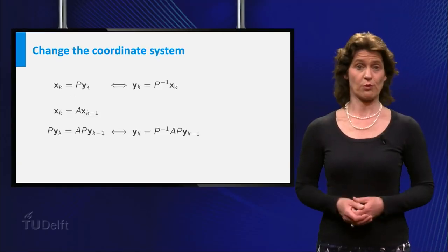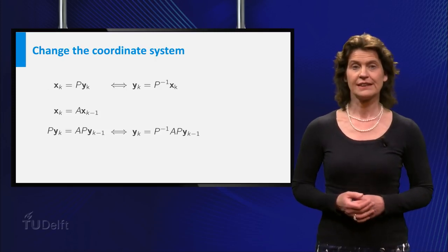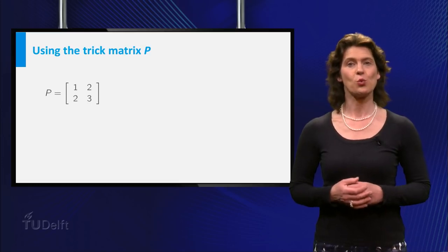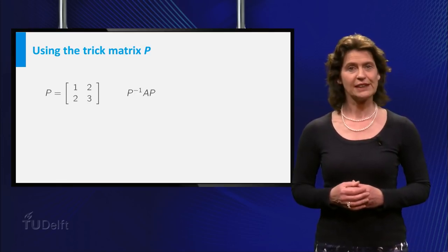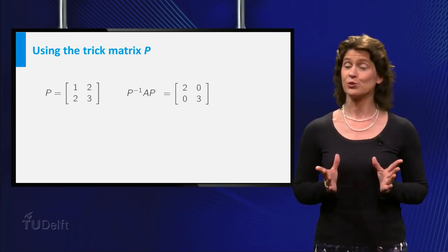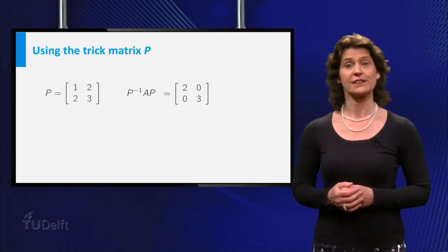So what, you would probably say. Well, here is how smart you have been. If in our example you take the matrix P equal to (1, 2; 2, 3), then you can compute P inverse AP, but only if you stop the video now and take your time to do the calculations. Hey, it's a diagonal matrix!